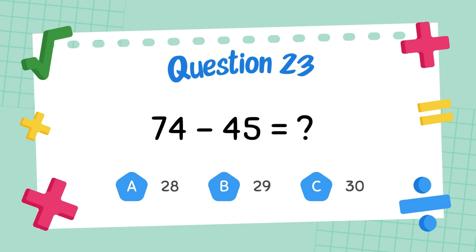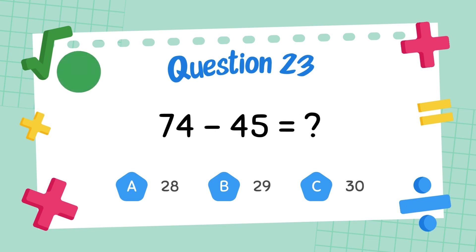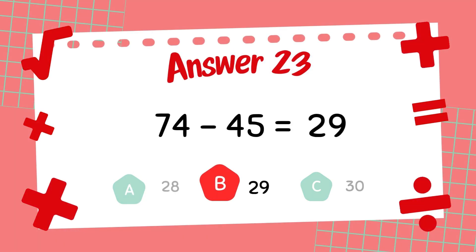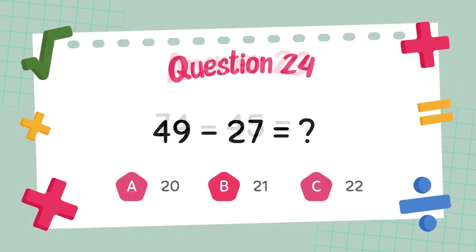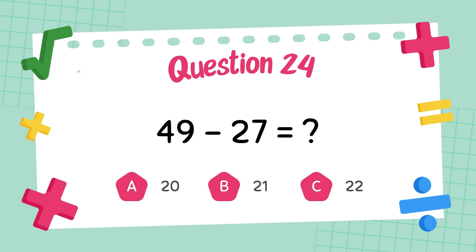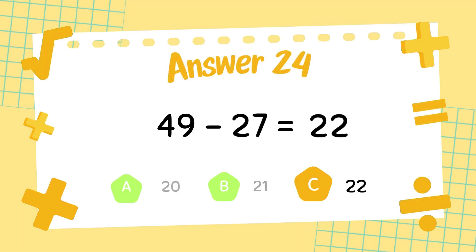What is seventy-four minus forty-five? The answer is twenty-nine. What is forty-nine minus twenty-seven? The answer is twenty-two.